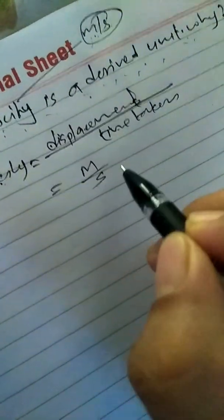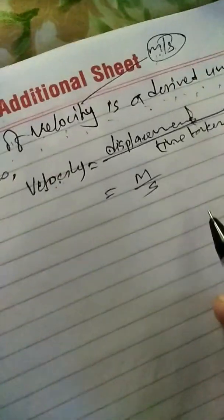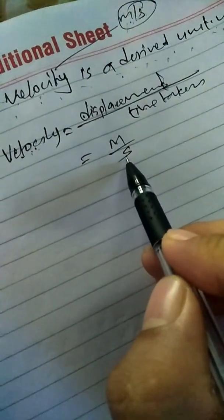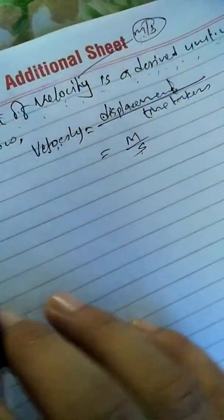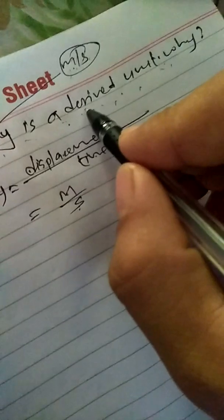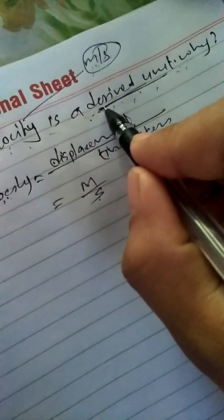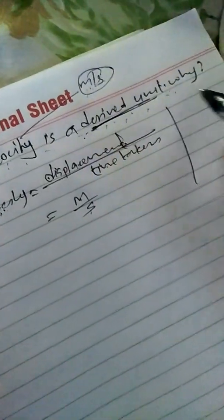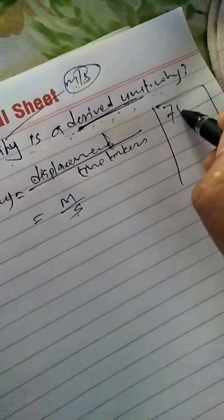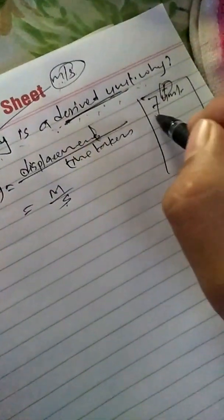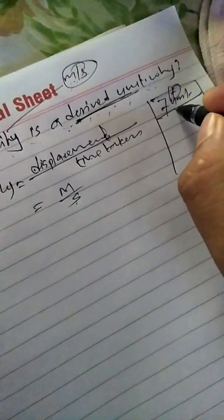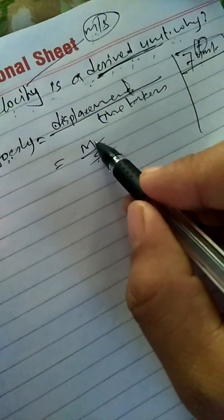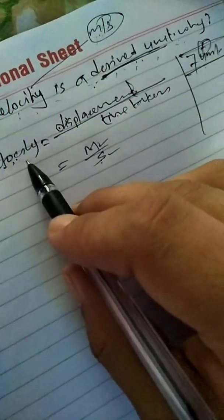The unit of time is second. So by the combination of meter and second, we get the SI unit of velocity. As we know the definition of a derived unit — a derived unit is always obtained from fundamental units. There are seven fundamental units, and by combination of those fundamental units we get a derived unit. Meter and second are fundamental units, so by their combination we get the unit of velocity, which is called the derived unit.